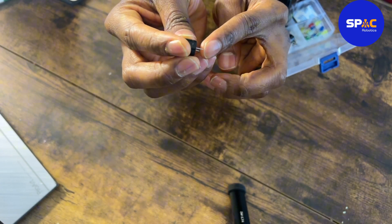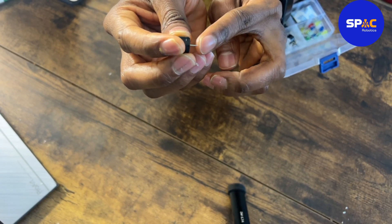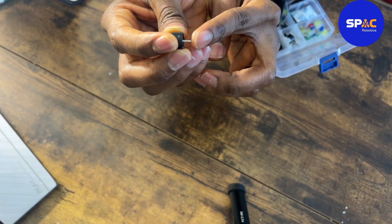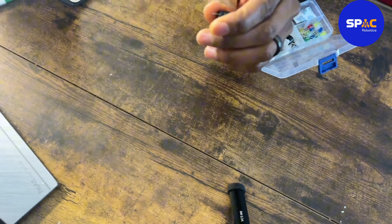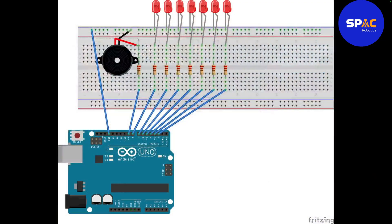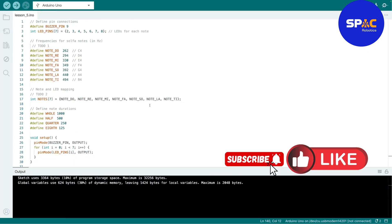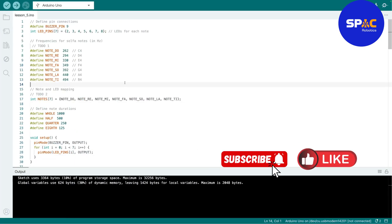The long leg is the positive and the short leg is the negative, just like with the LEDs. Since our buzzer has no wires, you can put it directly into the breadboard — put the long leg here and the short leg here. Now let's go to the code.